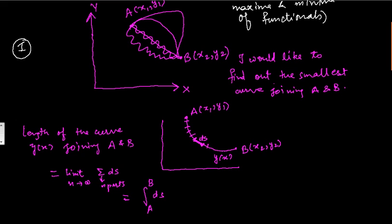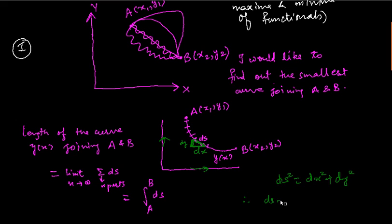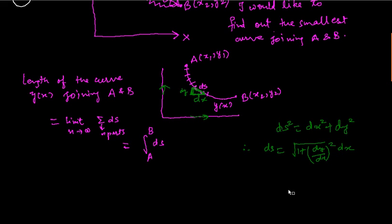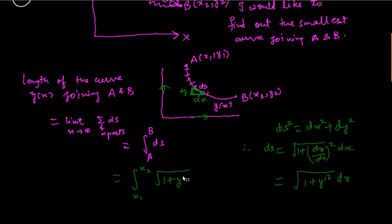Now, if this is my ds, the increment along the x-axis is dx and the increment along the y-axis is dy. Since ds is very small, this forms a right-angle triangle and we can apply Pythagoras' theorem: ds² = dx² + dy². Therefore, ds = √(1 + (dy/dx)²) dx. Using y′ for the derivative, ds = √(1 + y′²) dx. Therefore, the length equals the integral from x1 to x2 of √(1 + y′²) dx.